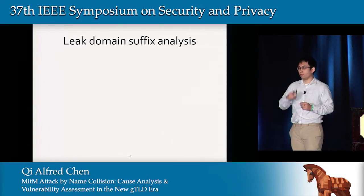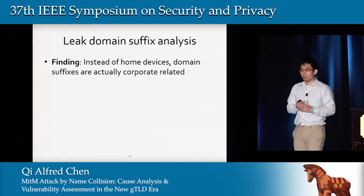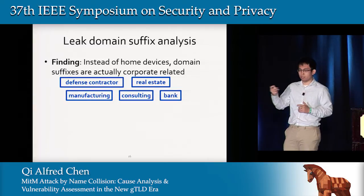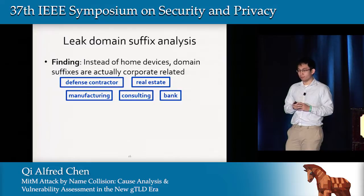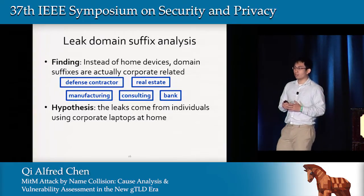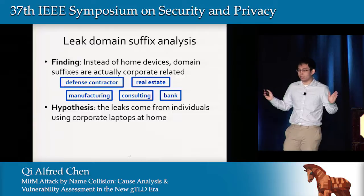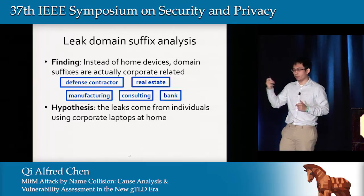We then inspected the domain suffixes of these leakage ASes. Instead of home-related suffixes, most of the domain suffixes are actually corporate-network-related — for example, we saw domain suffixes involving defense contractor companies, consulting, and real estate — which should not originate from home. This leads to a hypothesis that these leaks may be coming from individuals using corporate laptops at home. The leakage traffic should then have a diverse set of domain suffixes, creating significant entropy in the domain suffix distribution.